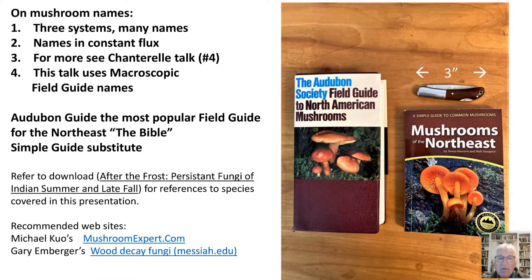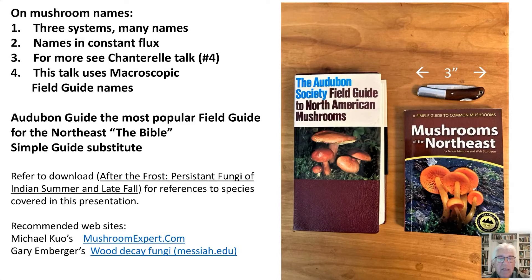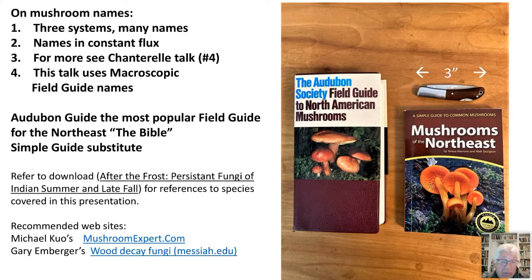I'll mention the Audubon guide. If you don't have that guide, it's probably the first one you should get — it's often called the Bible of the Northeast. It really is a true field guide you can put in your pocket, with more species than you're going to see in any other book of its size. They're on color-corrected sections of the book, so that helps a lot. It had been difficult to get during the last year because it was being printed in Japan, but now it's freely available. Another book that's cheaper and smaller is a simple guide to mushrooms of the Northeast.